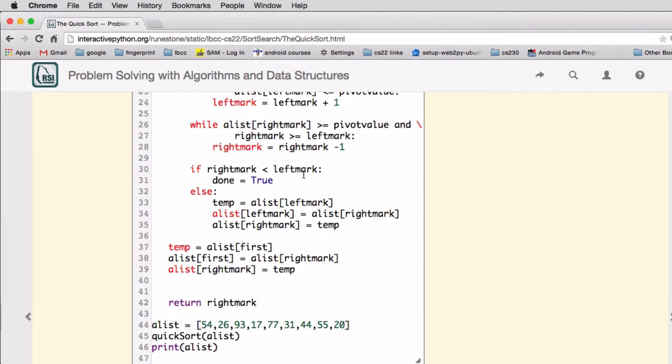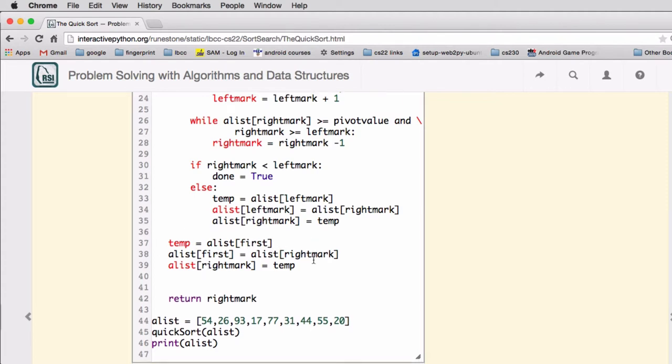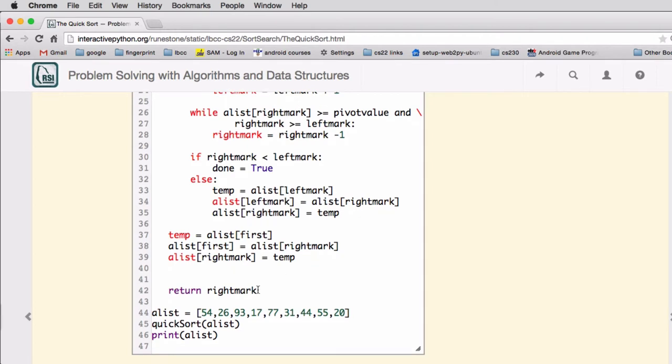When it's all done, it swaps the first value that just crossed with the original pivot. So that's what this code does. And then it finally returns the right mark, which is going to be where it split the list.